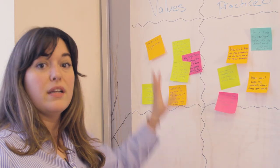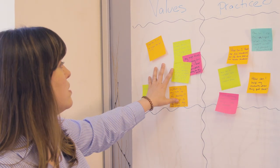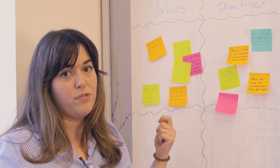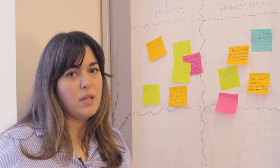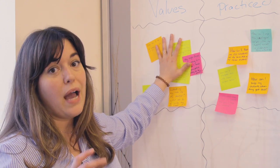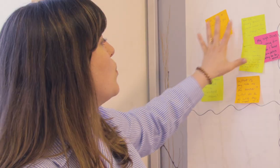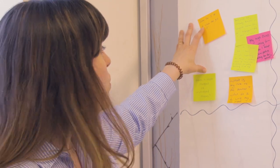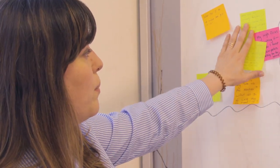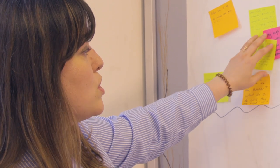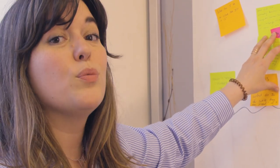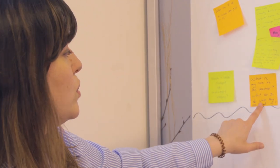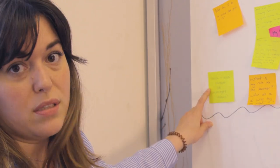We're going to get started in our values questions — these are questions I put into the values category when I picked them up from teachers. They didn't necessarily tell me they belong here, but they're related to our values in the classroom. We've got questions about including more girls in computer science, a cluster of questions about supporting students with different levels of content knowledge, and a question about the role of the teacher in plugged or unplugged lessons.